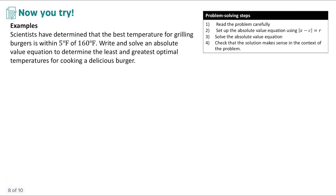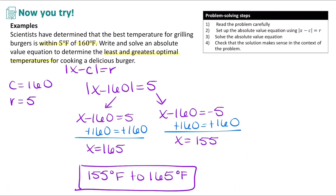Pause the video and try this problem on your own. Scientists have determined the best temperature for grilling is within 5 degrees of 168 degrees Fahrenheit. So 160 degrees is our central value and 5 is our range. We get the absolute value of X minus 160 equals 5. Separating into two equations gives X equals 165 and X equals 155, giving a range from 155 degrees Fahrenheit to 165 degrees Fahrenheit.